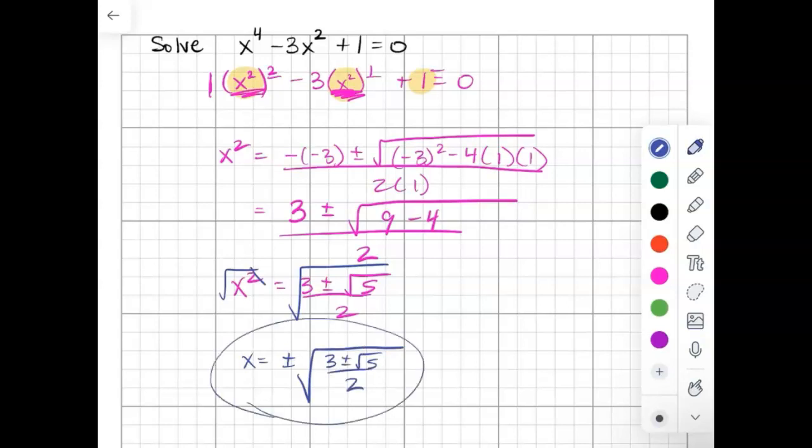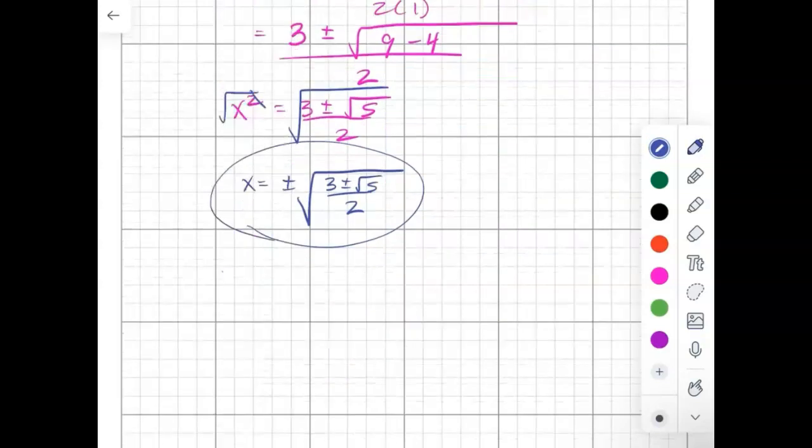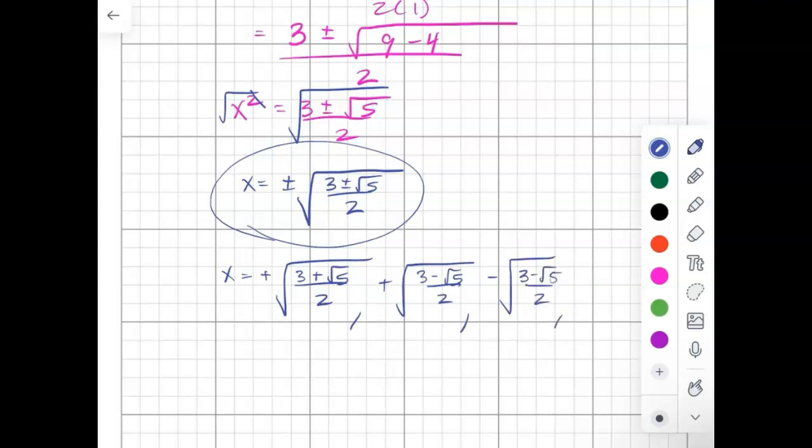That's actually four solutions. You're getting x equals the positive square root of the positive radical 5, positive square root of the negative radical 5, negative square root of the negative radical 5, and negative square root of the positive radical 5. So there's four solutions when you look at that.